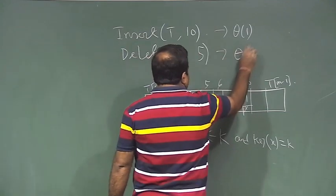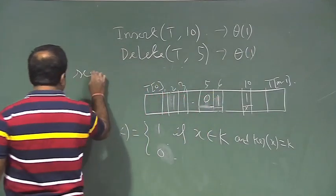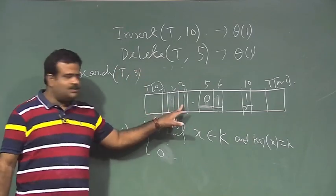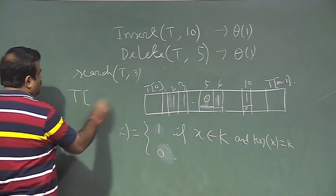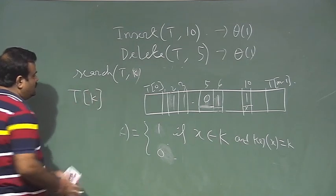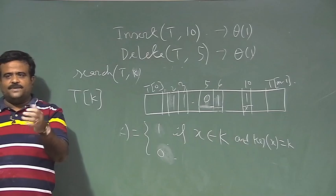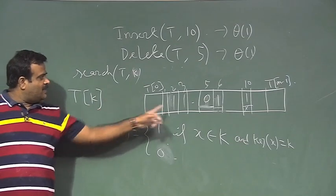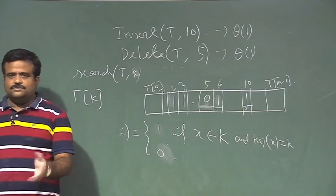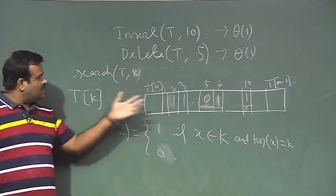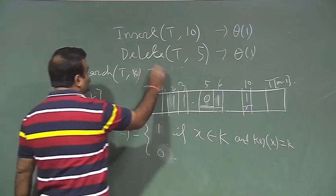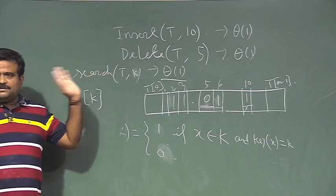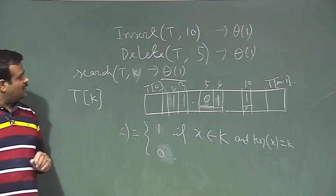Searching a record whose key value is say 3: we go to array position t[k]. If t[k] is 1, we have the record and can follow the pointer to get the full data. If t[k] is 0, the record is not there. So search also takes Θ(1) time. All three operations — insert, delete, search — can be done in constant time. This is a very simple but very powerful data structure — just a 0/1 bit vector.